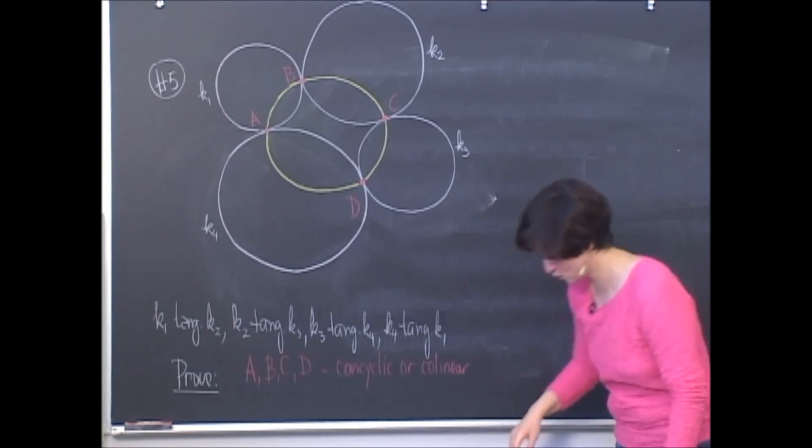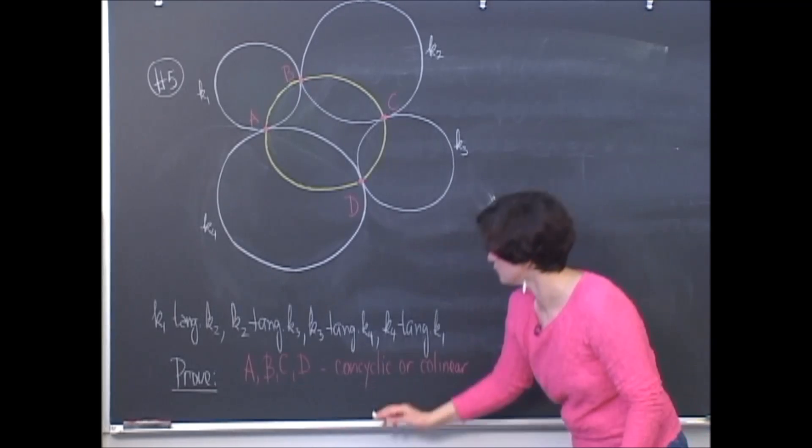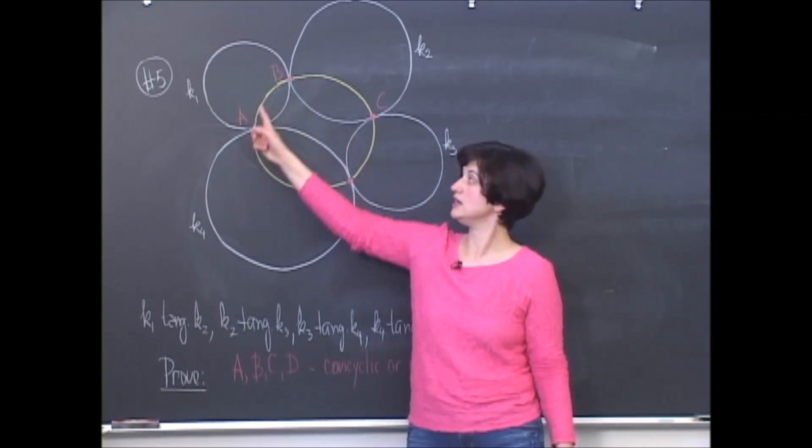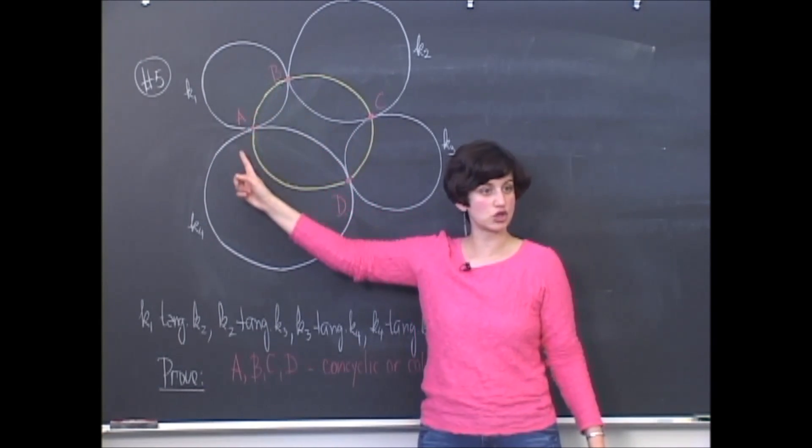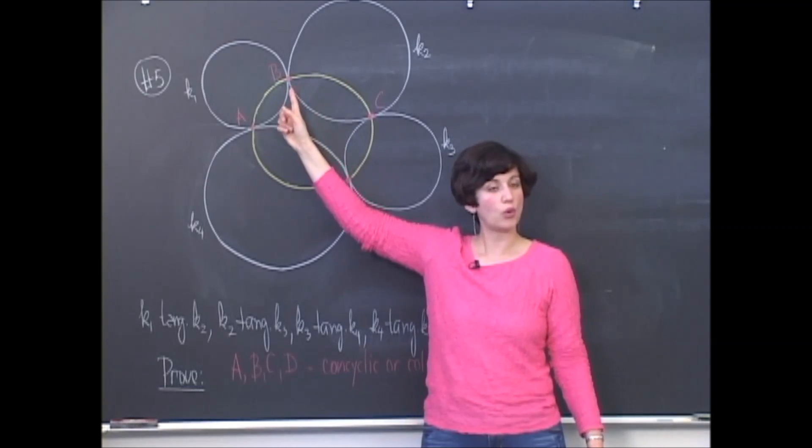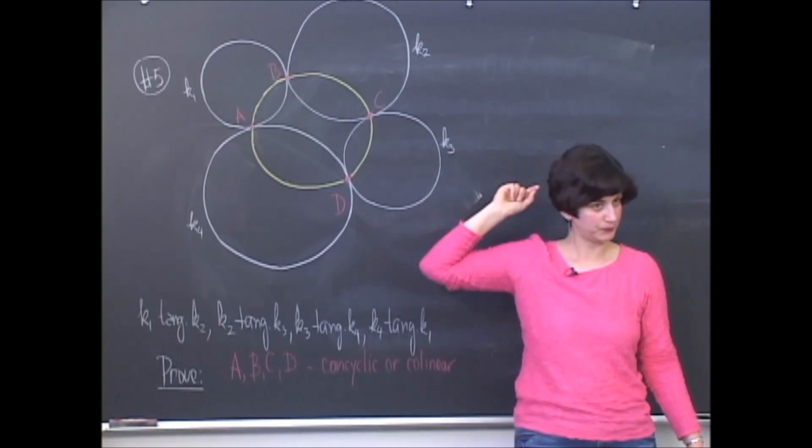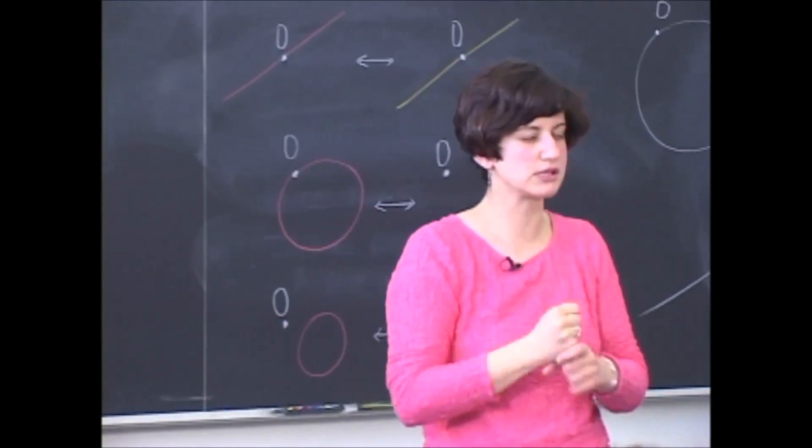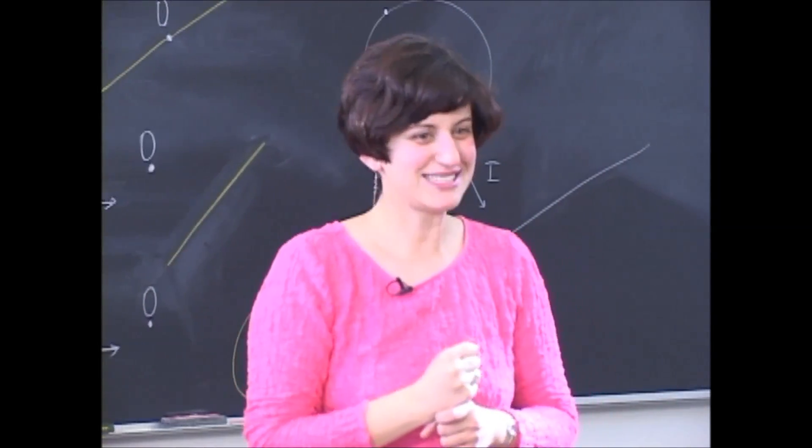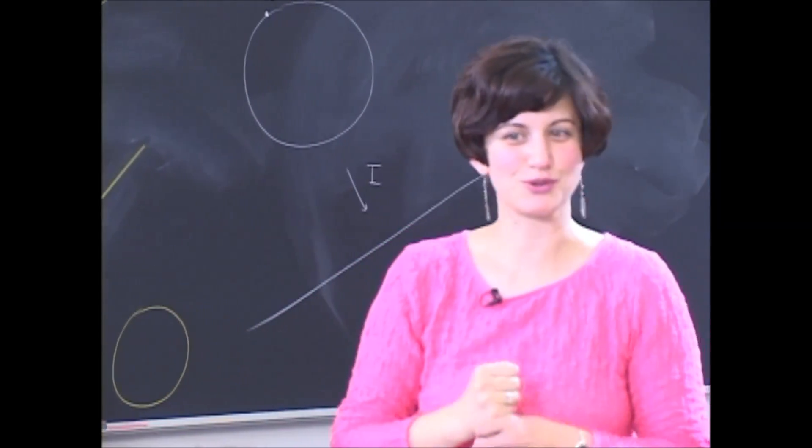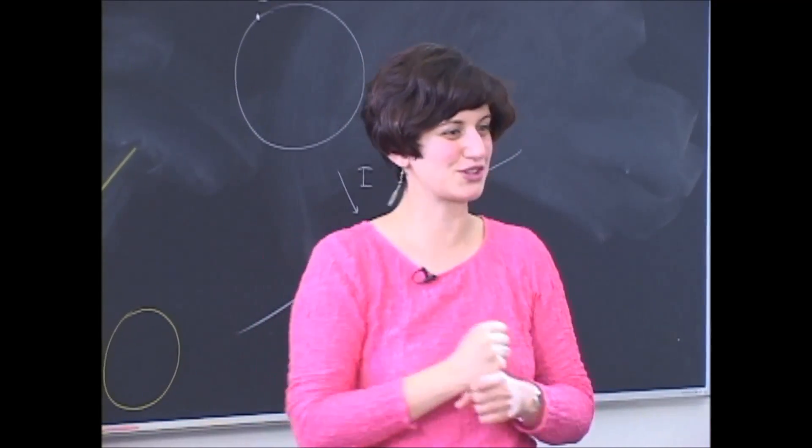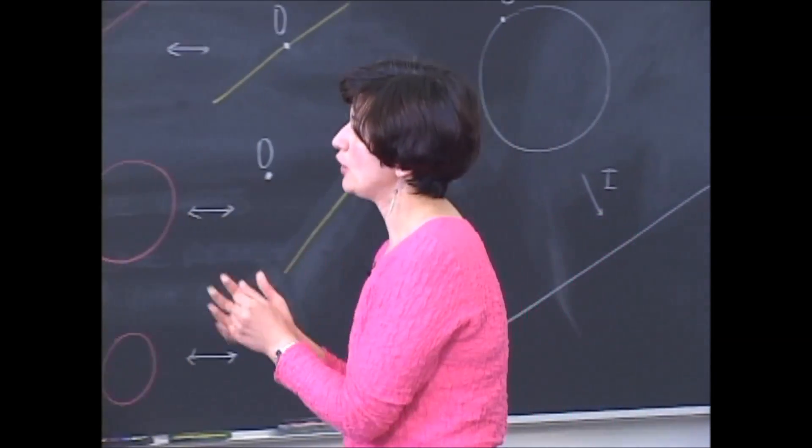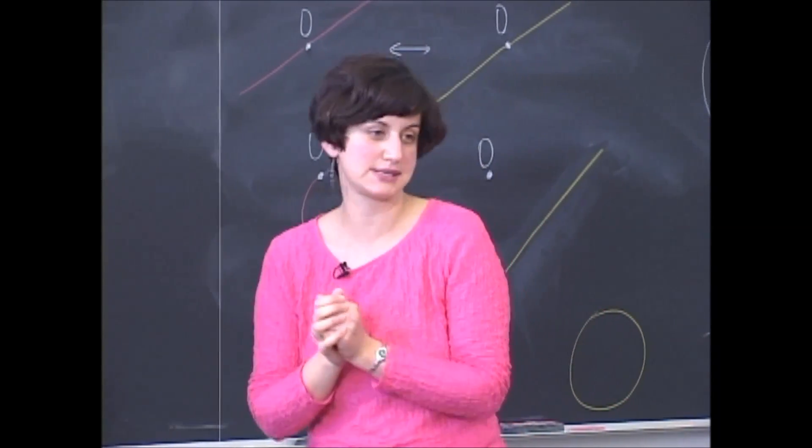And we are supposed to show that these four points lie either on a circle, as I have drawn in this yellow circle here, or they lie on a line. It's hard to imagine how they lie on a line unless you draw the exact picture. But it is possible. It's a challenge for you to try at home, drawing four circles so that the points lie on a line. So how do we prove this?